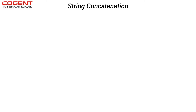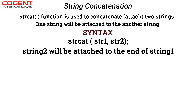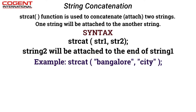Let us understand string concatenation. The strcat function is used to concatenate two strings — meaning attaching or joining one string to another. The syntax is: strcat(str1, str2); — string 2 will be attached to the end of string 1. For example, strcat("bangalore", "city") gives the output "bangalore city".